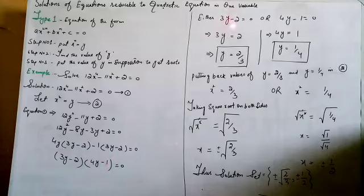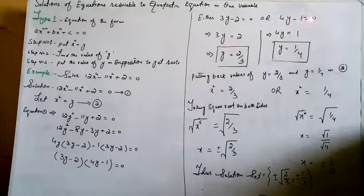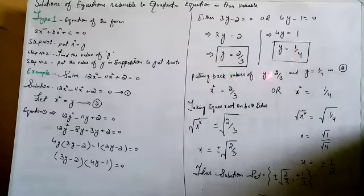Since the product of two factors equals zero, either the first factor equals zero or the second factor equals zero. So: 3y - 2 = 0 → 3y = 2, or 4y - 1 = 0 → 4y = 1. Therefore y = 2/3 and y = 1/4.